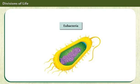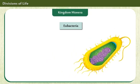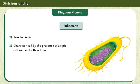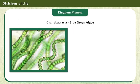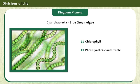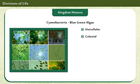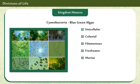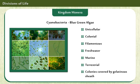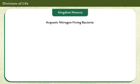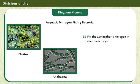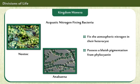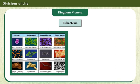Eubacteria are classified under Kingdom Monera. They are true bacteria, characterized by the presence of a rigid cell wall and a flagellum. Cyanobacteria, also called blue-green algae, have chlorophyll and are photosynthetic autotrophs. They are unicellular, colonial, or filamentous, and freshwater, marine, or terrestrial in habitat. Their colonies are surrounded by a gelatinous sheath. Aquatic nitrogen-fixing bacteria, Nostoc and Anabaena, fix atmospheric nitrogen in their heterocysts. They get their bluish pigmentation from phycocyanin, which is used to absorb light for photosynthesis.